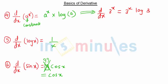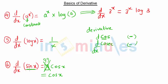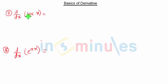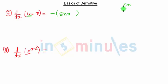Here is a shortcut trick: in derivatives, whenever you see any term starting with 'co' — that is cosine or cosecant — that derivative will be negative. Since we are taking the derivative of sin, it is positive. For cos x, since it starts with 'co', the derivative is negative: minus sin x. Whenever a term starts with 'co', its derivative is negative — remember this important shortcut.